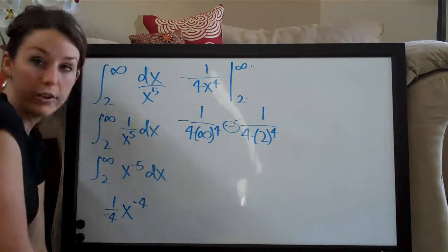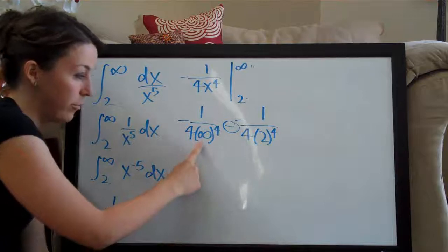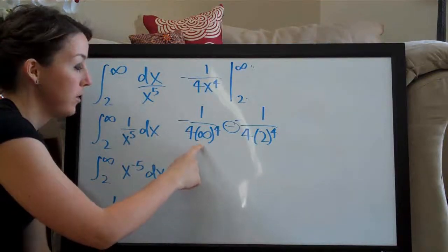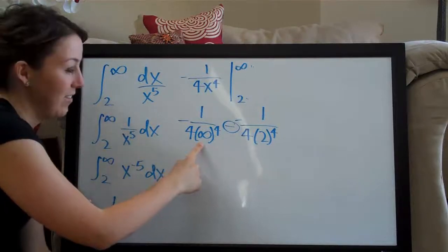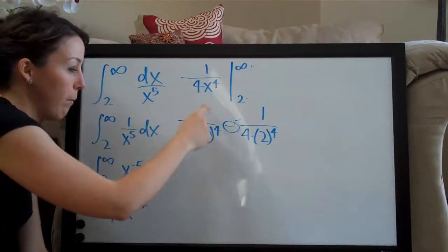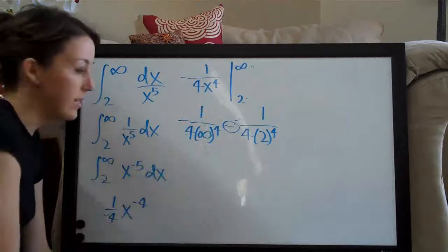Some people can just kind of look at it and figure out what this term's going to be. It's easier for me to plug in one million or ten million or something like that to the fourth times four, one divided by that answer and see what I get.